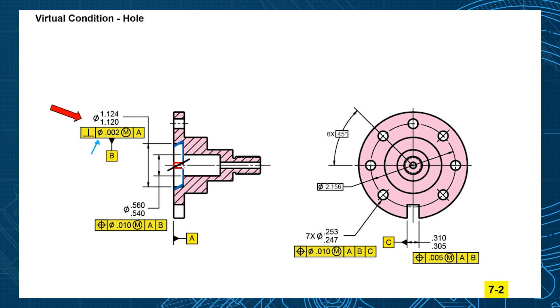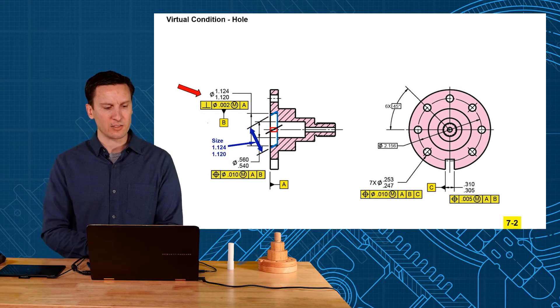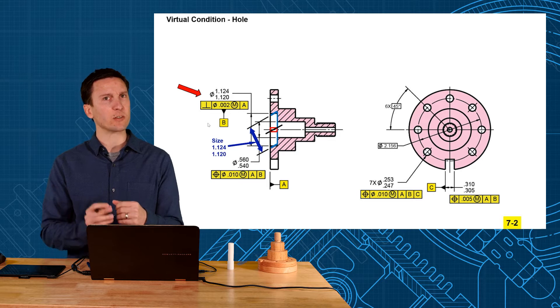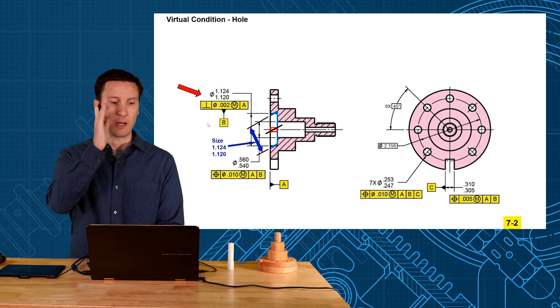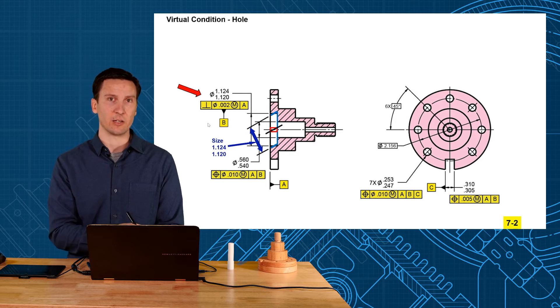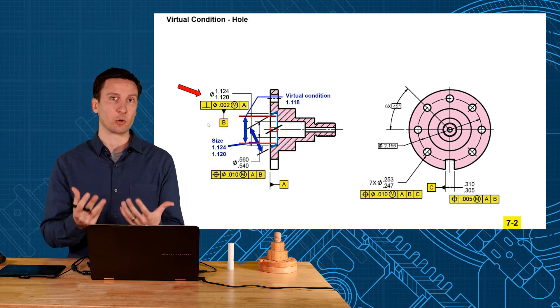Now if I asked you the question what size is that hole? You would reply the size of the hole is indicated here 1 inch 120 to 1 inch 124. Okay that's the size of the hole but what I really want to know is what size is that hole when you're looking perfectly perpendicular to datum A. Well you're not going to see that size anymore you're going to see something smaller and that size is what we call the virtual condition.